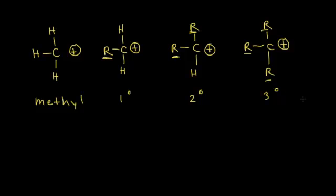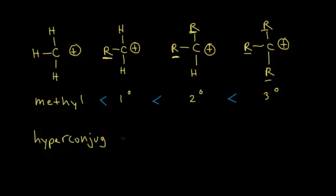In terms of stability, the tertiary carbocation is the most stable. Tertiary is more stable than secondary, secondary is more stable than primary, and primary is more stable than methyl. As we increase the number of alkyl groups, we increase carbocation stability. The reason why is an effect called hyperconjugation, which explains why carbocation stability increases as the number of alkyl groups increases.